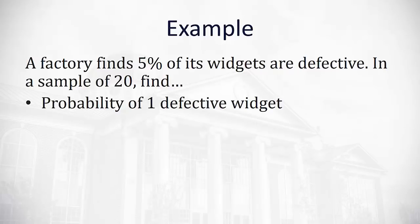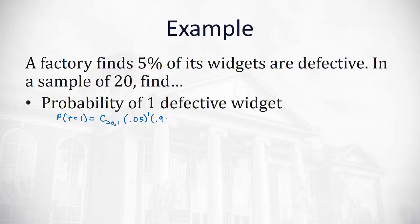In a sample of 20, we want to find the probability of one defective widget — the probability that r equals 1. We'll take a combination of 20 choose 1, times the probability of success, which is 0.05, raised to the 1st power, times the probability of failure, which is 0.95, raised to the 19th power — that gives us the number of failures.